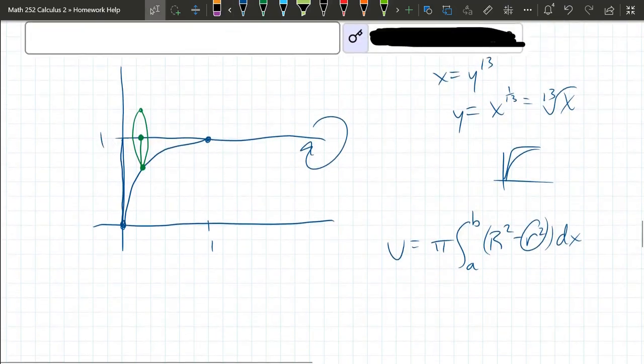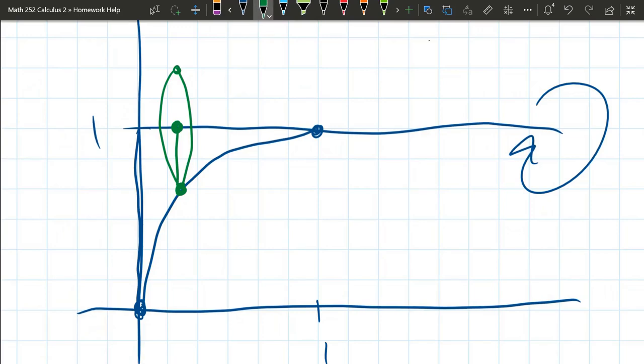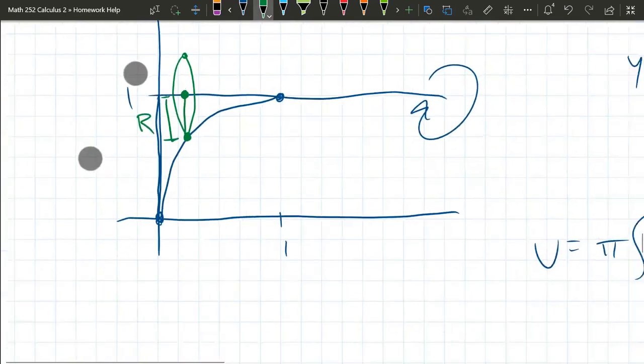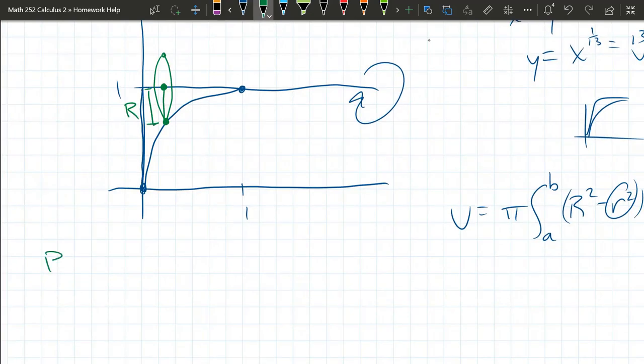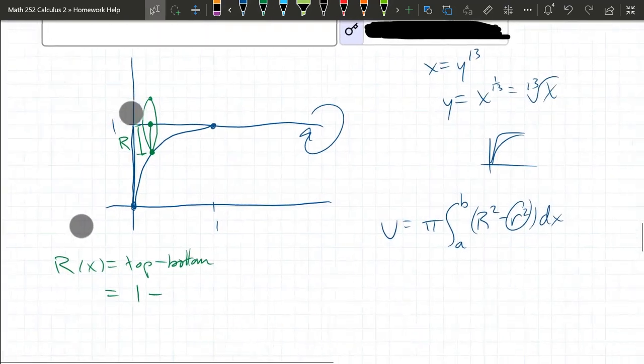What about big R? So big R is this distance here. It's a function of x. It's top minus bottom or big minus small. So the top is Y equals 1. So the top is 1. Now what's the bottom? The bottom is that curve.